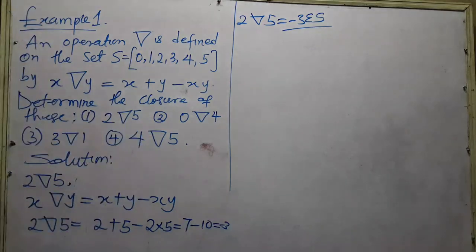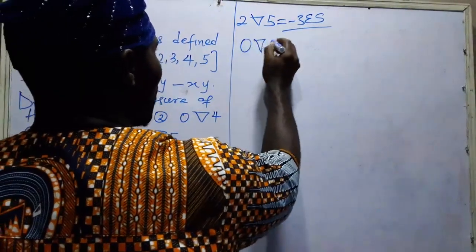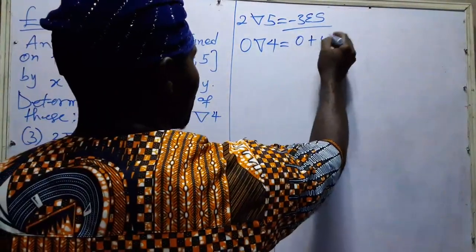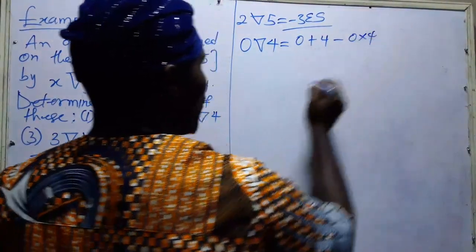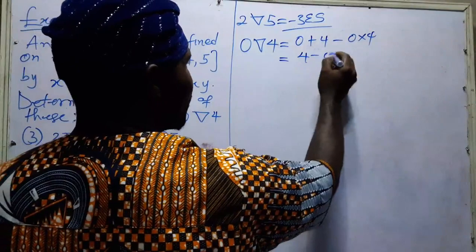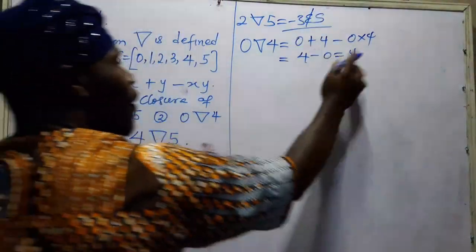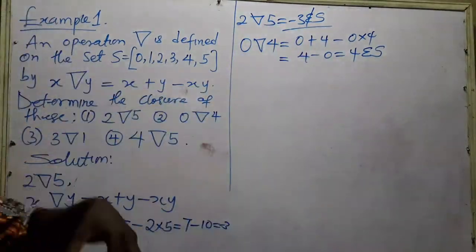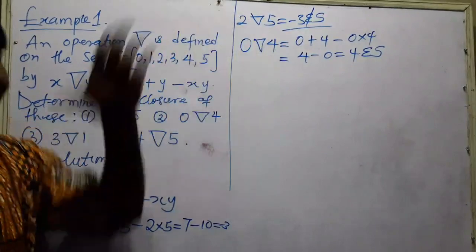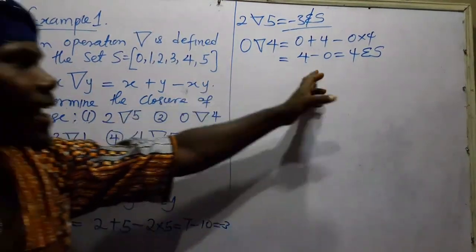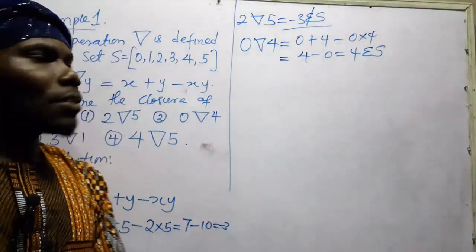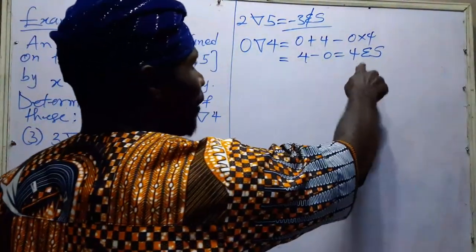Now let's determine the second part: zero operation four. Using the definition of the operation, zero operation four equals zero plus four minus zero times four, which gives us four minus zero, equal to four. Four is an element of X. Minus three, by contrast, is not an element of X. Since four is an element of X, zero operation four is closed.